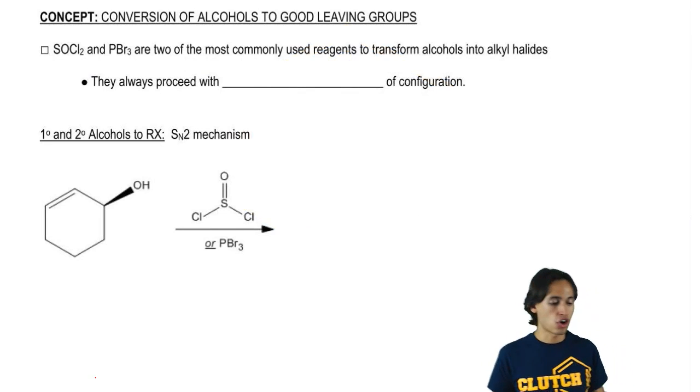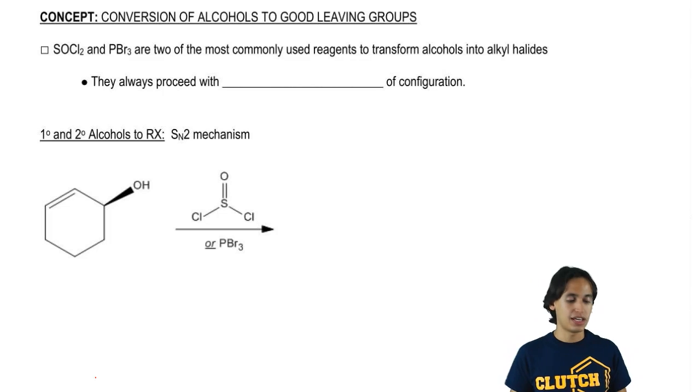Let's look at those. These reagents are SOCl2 and PBr3, and respectively, they're going to turn alcohols into alkyl chlorides or alkyl bromides.